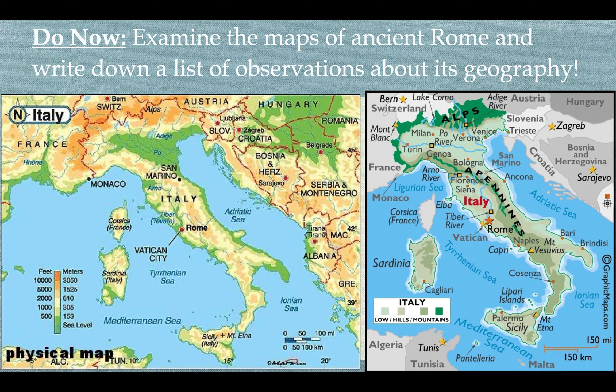We're going to take a look at two physical maps of ancient Rome. Physical maps show the waterways, the different elevations of the land, as well as the type of landform. Take a look at the maps and then make a list of observations about the geography, because understanding the geography is a key part of understanding ancient Rome — geography influences how societies are developed and how people live within the environment. Pause the video and answer the do-now, and make sure you post your answer in the Google Classroom post as usual.